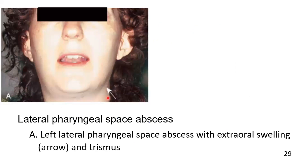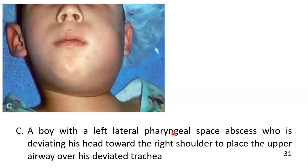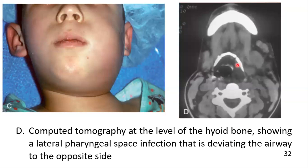Here you can see the left lateral pharyngeal space abscess with extraoral swelling and trismus, and an intraoral view of the same patient illustrating swelling of the anterior tonsillar pillar and blunting of the palatal uvular fold. Also shown is a boy with a left lateral pharyngeal space abscess who is deviating his head towards the right shoulder to place the upper airway over his deviated trachea. CT at the level of the hyoid bone shows a lateral pharyngeal space infection deviating the airway to the opposite side.